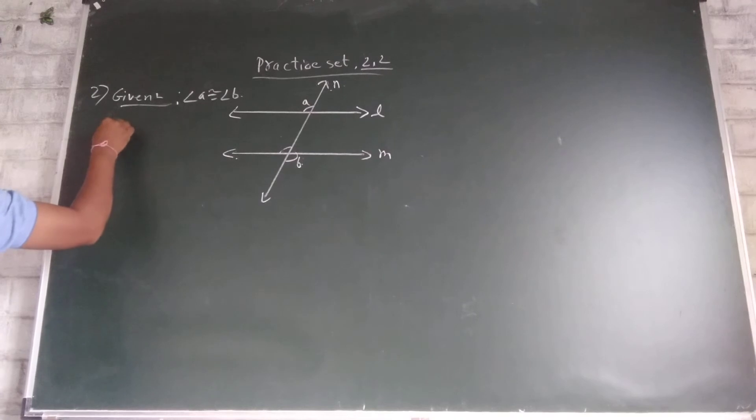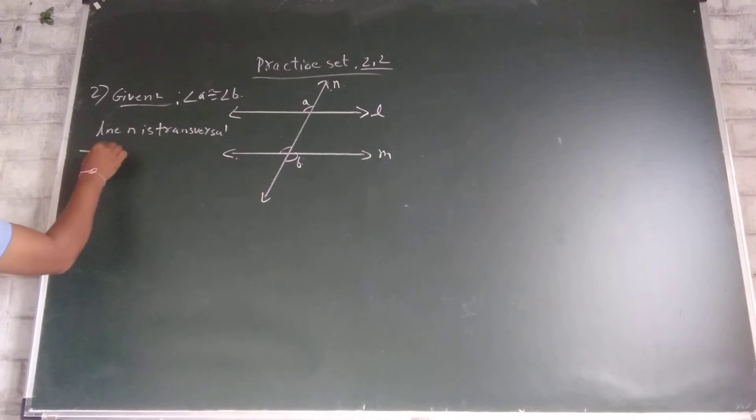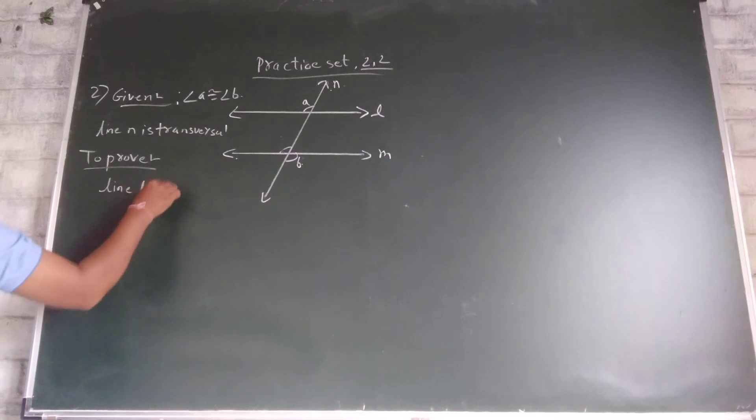And line N is transversal. What do I have to prove? Line L parallel to line M.